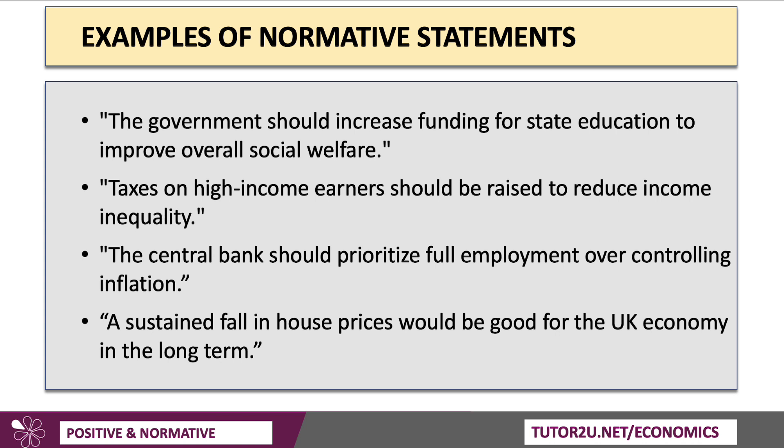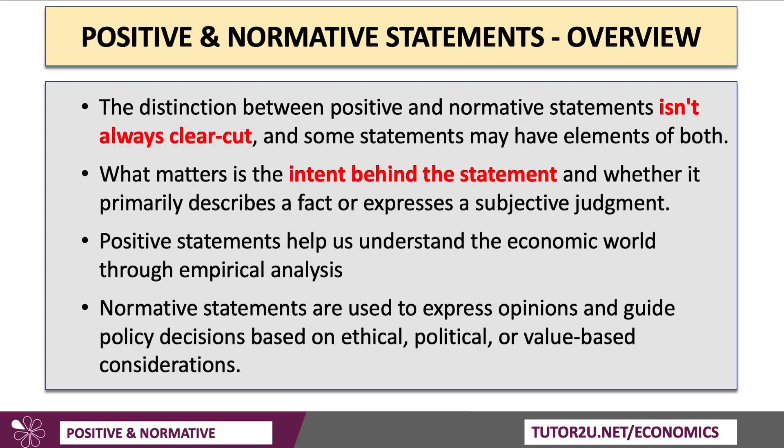For example: the government should increase funding for state education to improve social welfare; taxes on high income earners should be lifted to reduce income inequality; the central bank should prioritize full employment over controlling inflation; and a sustained fall in house prices would be good for the UK economy in the long run. We can build some objective analysis into these, but essentially they carry normative views.